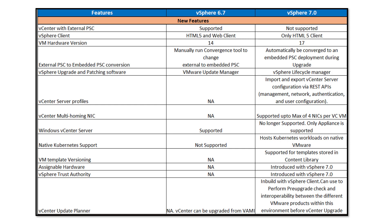Next is VM hardware version. In vSphere 6.7 the VM hardware version is 14, but in 7.0 it is 17. It is very important that once we upgrade vSphere, we also upgrade the VM hardware version of our virtual machines to 17 to take advantage of the new features released with vSphere 7.0.